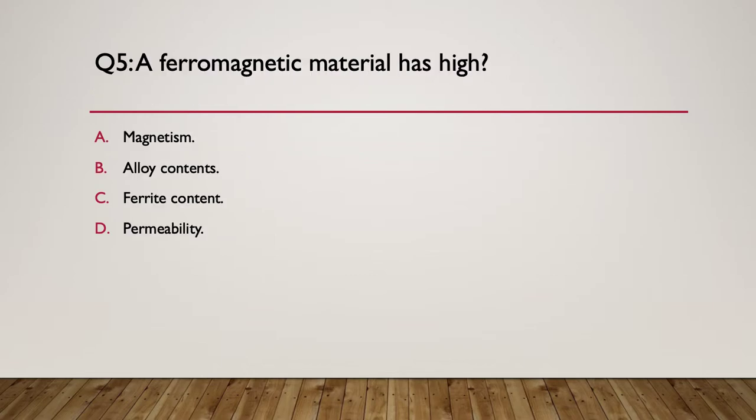Question five: a ferromagnetic material has a high what? The options are: A — magnetism; B — alloy content; C — ferrite content; or D — permeability. Pause here.